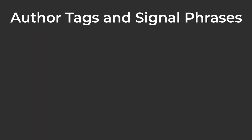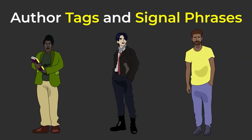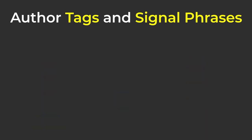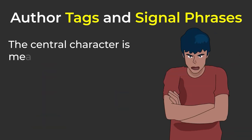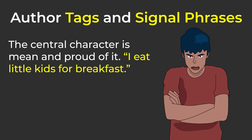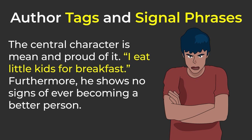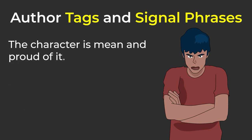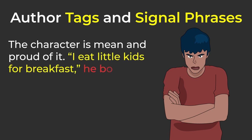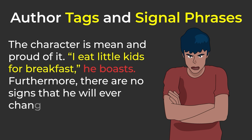Author tags and signal phrases. Additional elements that smoothly integrate quotations into the flow of your writing are tags and signal phrases. Tags and signal phrases that identify the author, the character, or the commenter you're quoting help the reader make the connection between the quotation and its source. Remember the drop quotation: "The central character is mean and proud of it. 'I eat little kids for breakfast.' Furthermore, he shows no signs of ever becoming a better person." Now look at how we integrated it so that it no longer creates a splash: "The character is mean and proud of it. 'I eat little kids for breakfast,' he boasts. Furthermore, there are no signs that he will ever change for the better."